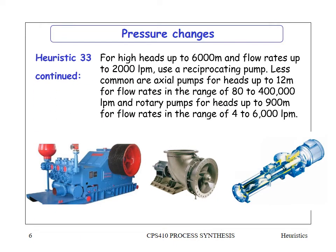For high heads up to 6,000 meters — that's 600 bar pressure — and flow rates up to 2,000 liters per minute, which is a relatively low flow rate but extremely high head, use a reciprocating pump. That is the illustration on the left-hand side. A reciprocating pump has pistons that compress the liquid and push it up to a higher pressure.